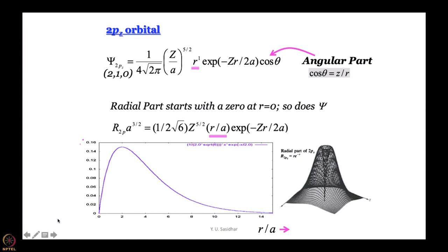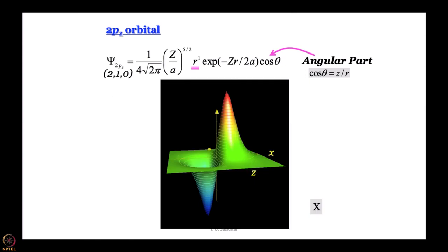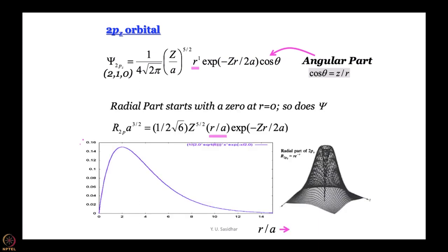Now we try to show you some even more beautiful pictures. We move on to p orbitals and the simplest p orbitals are of course 2pz orbitals. Here the principal quantum number is 2, the azimuthal quantum number is 1, and the magnetic quantum number for 2pz is equal to 0. We will learn very soon why it is called 2pz.